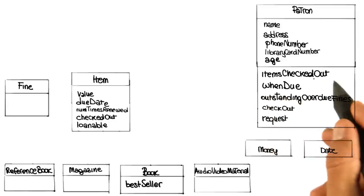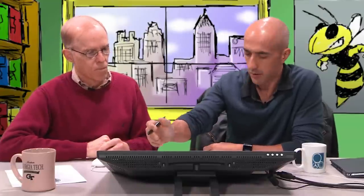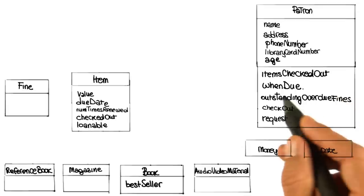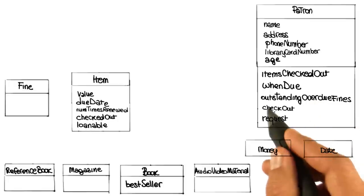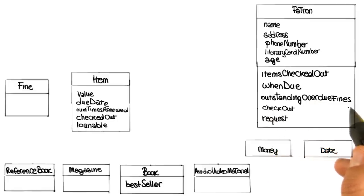The first one I'm going to call items checked out. And basically it's an operation, you don't need to understand the implementation details, but when you call this operation, it will give you back exactly this information, so the items that are checked out by the patron. The second one I'm going to call it when due. That will tell you basically when an item is due. And the third one is going to be called outstanding overdue fines. As the name says, it's going to tell you what are the outstanding overdue fines for that patron.